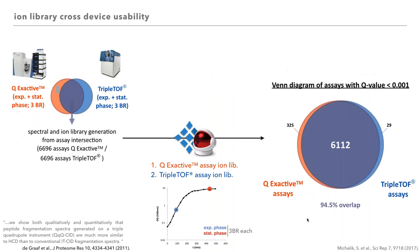The basic ion library was generated from six DDA runs from the QExactive and six DDA runs from a TripleTOF 5600+ instrument. The major difference between both devices is mass detection and fragmentation mode: the TripleTOF data are collected with CID fragmentation and the QExactive data with HCD fragmentation. Graf and colleagues stated that HCD and CID fragmentation are very similar. We tested first if an ion library generated with a QExactive instrument is suitable for DIA analysis of data collected on a TripleTOF, and second if we can merge the MS information from both instruments in one fragment ion spectral library.